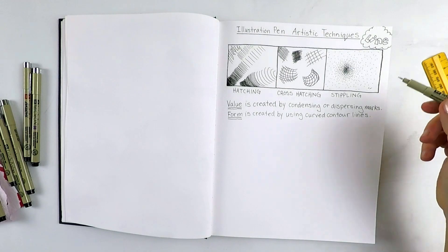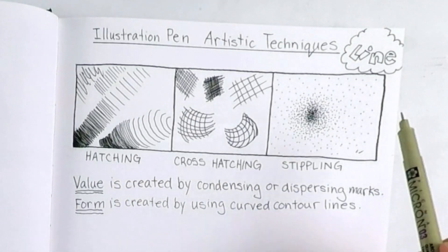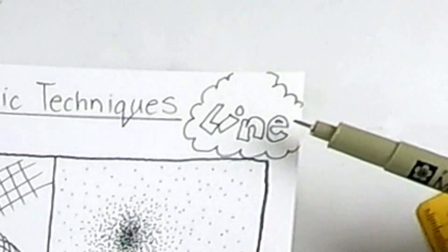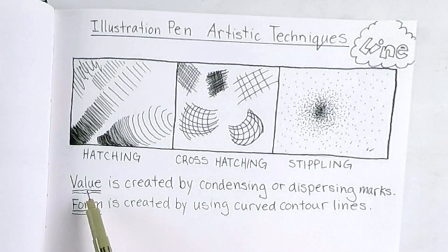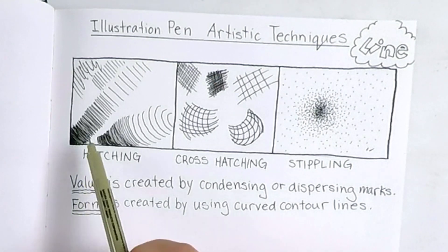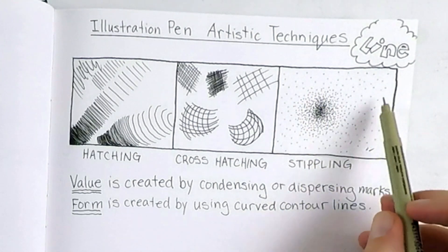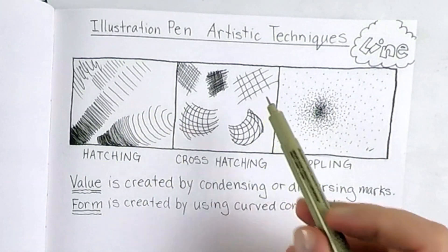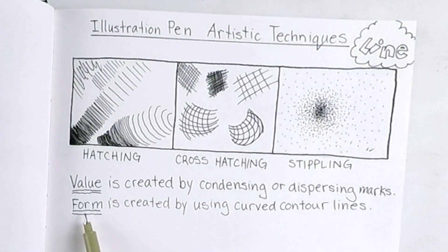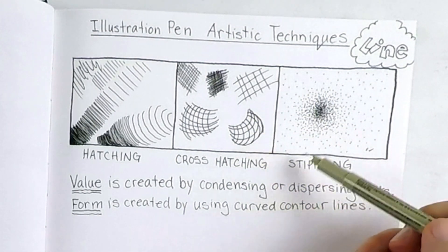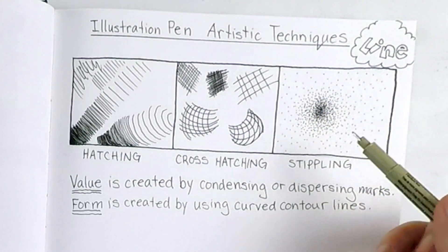We have got three different artistic techniques: hatching, cross hatching, and stippling, which are a variety of different types of line. Used correctly we can get a sense of value, a darkness or lightness of a tone by either condensing our marks or dispersing them, like we did here and here. We can also create the 3D illusion of form on our flat piece of paper by curving our lines and using contour lines, and we can do the same with stippling as well.